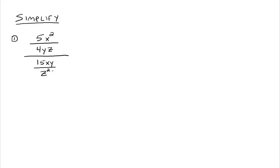We have these little fractions inside the bigger fraction. The plan of attack is that we can multiply the numerator and the denominator of a fraction by the same non-zero expression, and everything would still be okay. Because multiplying the top and the bottom of a fraction by the same thing is essentially multiplying that fraction by the number 1, and multiplying by 1 does not change the value.